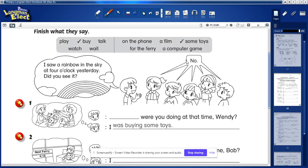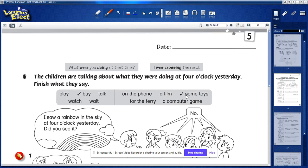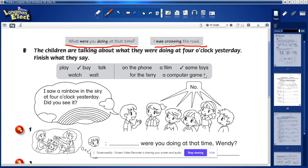Now we're on page 18. On this page we are going to write sentences using this sentence structure. Let's take a look at this picture. The children are talking about what they were doing at four o'clock yesterday. Finish what they say. This boy says to these children, I saw a rainbow in the sky at four o'clock yesterday, did you see it? Everybody said no. So what happened? The boy asked Wendy.